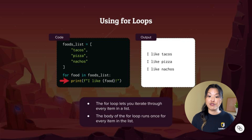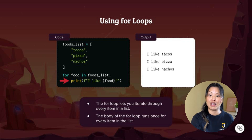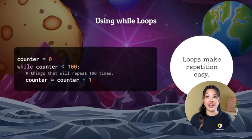So the for loop lets you iterate through every item in the list. The body of the for loop runs once for every item in that list — so for each item we had here, we did this action, which was print 'I like food.' Another loop that we can use to get the information in this list is called a while loop.